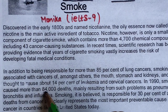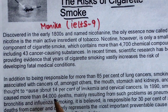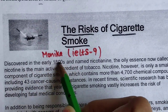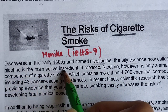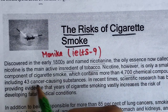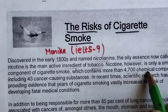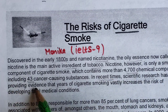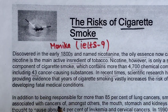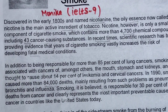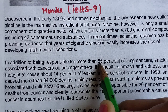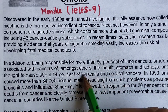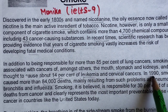We can easily find the location of this question with '84,000'. In the second paragraph we find nicotine — the main ingredient of tobacco. Cigarette smoke contains more than 4,700 chemical compounds, including 43 cancer-causing substances. Scientific research has been providing evidence that years of cigarette smoking vastly increases the risk of developing fatal medical conditions. Smoking is responsible for 85% of lung cancers, and is associated with cancers of the mouth, stomach, kidneys.